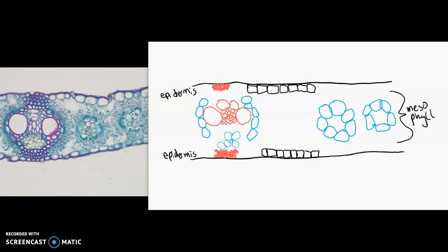So the companion cells are the smaller ones. You can often see a nucleus inside there, whereas the sieve tube elements are much larger and without a nucleus. So you can kind of see those in there in that region. So we have the phloem here and then the xylem on the other end.